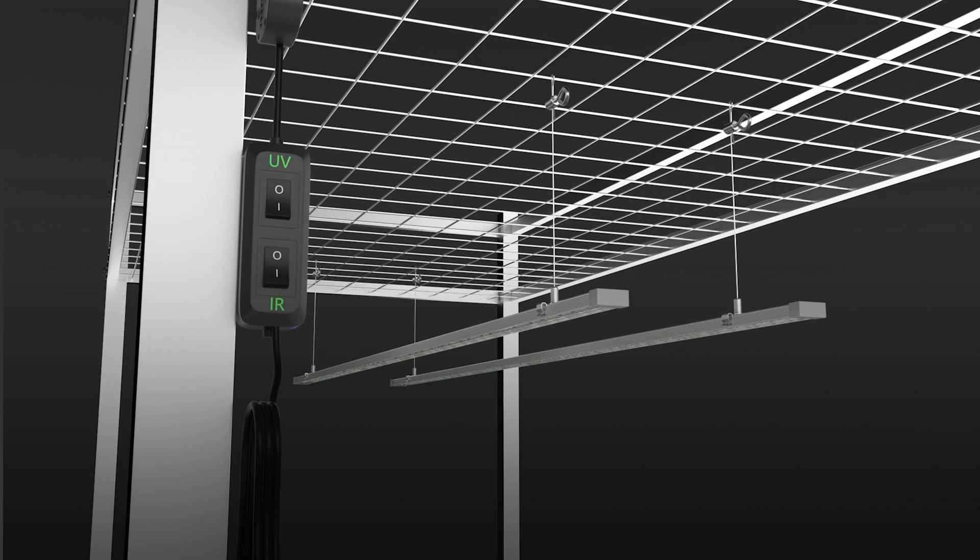The UV and IR can be controlled separately with two buttons. Push the I button to turn the light on, and push the O button to turn off the lights.